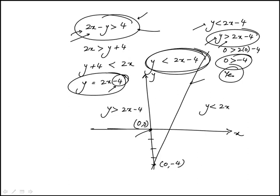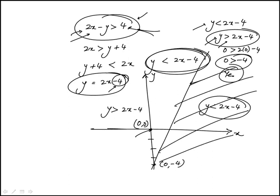Which means that that section is y is greater than 2x minus 4, and the other one is y is less than 2x minus 4, which is the same as the original inequality. So this region, this half plane is the solution to the original inequality.